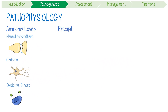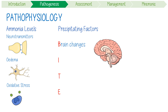Some key precipitating factors for HE can be remembered with the BITE acronym. B stands for brain changes, like those triggered by alcohol use or Wilson's disease. I stands for infection — anything that causes decreased perfusion to the brain, like sepsis or bleeding, can precipitate HE.